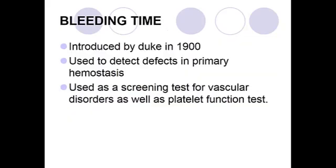Bleeding time test was introduced by Duke in the year 1900. It is used to investigate abnormalities in primary hemostasis. This test is also used as a screening test for vascular disorder and platelet function.